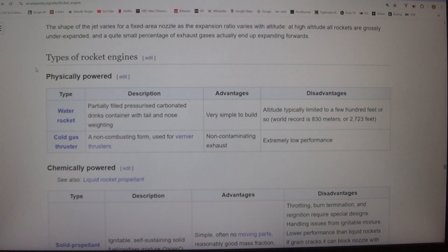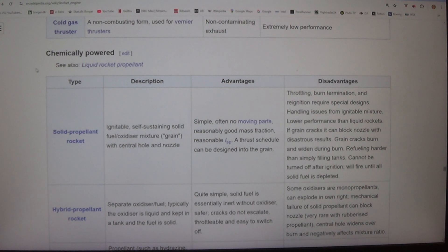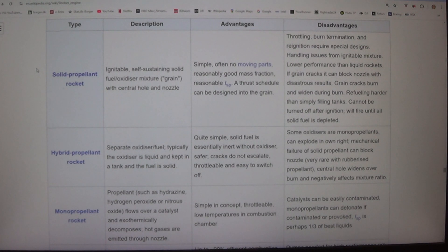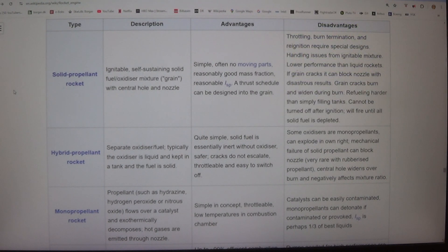Chemically powered. Solid propellant rocket - ignitable, self-sustaining solid fuel/oxidizer mixture (grain) with central hole and nozzle. Simple, often no moving parts. Reasonably good mass fraction, reasonable ISP. A thrust schedule can be designed into the grain. Disadvantages: Throttling, burn termination, and re-ignition require special designs. Handling issues from ignitable mixture. Lower performance than liquid rockets. If grain cracks, it can block nozzle with disastrous results. Grain cracks burn and widen during burn. Refueling harder than simply filling tanks. Cannot be turned off after ignition. Will fire until all solid fuel is depleted.